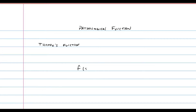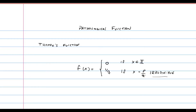This function, which we'll call f, is defined as zero if x is an irrational number, and one over q if x is equal to p over q, an irreducible rational number. This means that the GCD between p and q is equal to one — that is, p and q are both co-prime numbers.